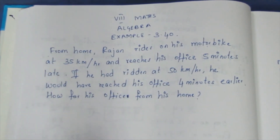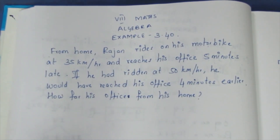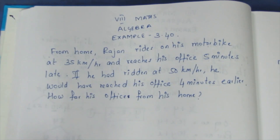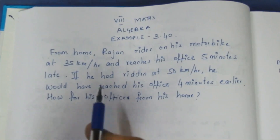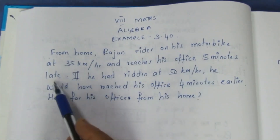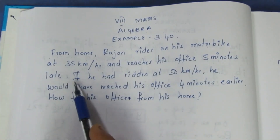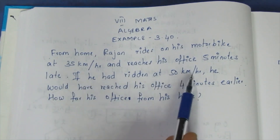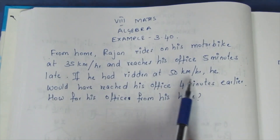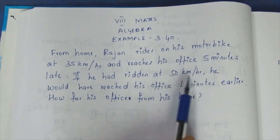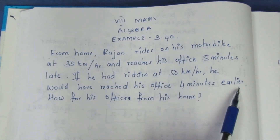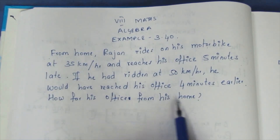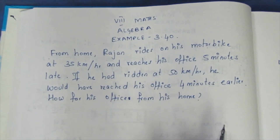Hello viewers, I am Aitri. This is 8th Max Algebra Example 3.40. Radan rides his motorbike at 35 km per hour and reaches his office 5 minutes late. If he had ridden at 50 km per hour, he would have reached his office 4 minutes earlier. How far is the office from his home?